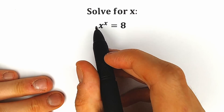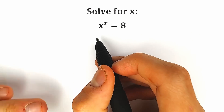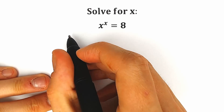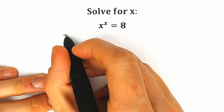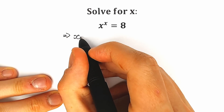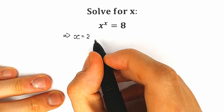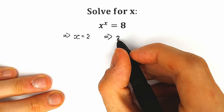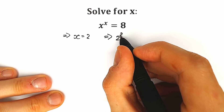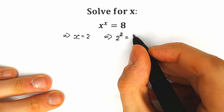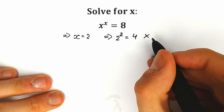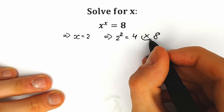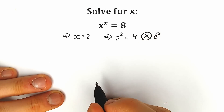A lot of students might say, let's try to solve this question by inspection. Let's try x equal to 2. When x equals 2, we have 2 squared equal to 4. So it's not 8 — not a good root for us.